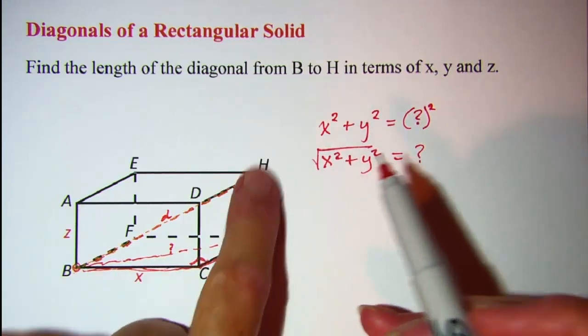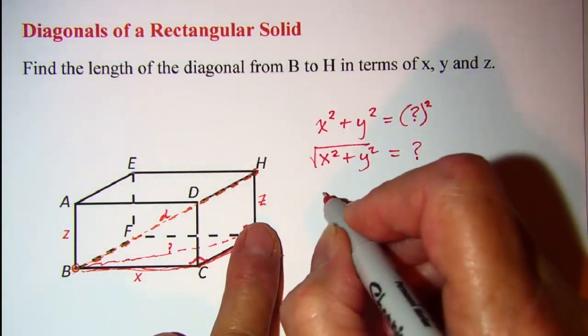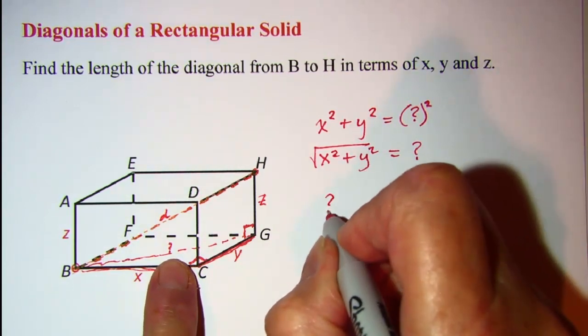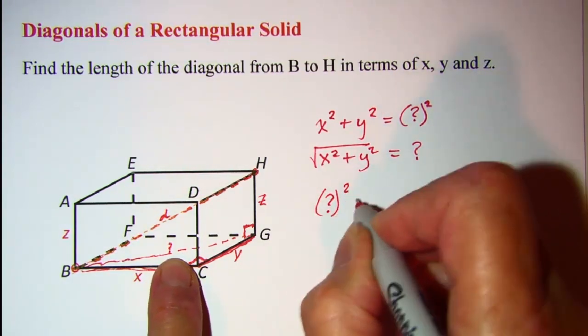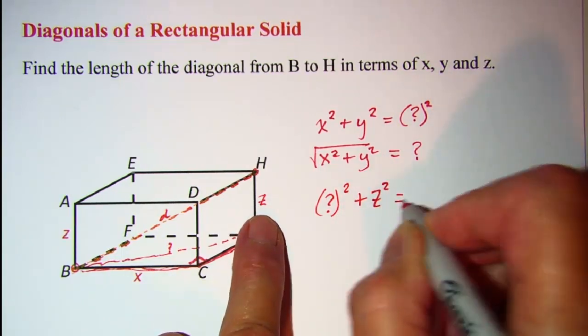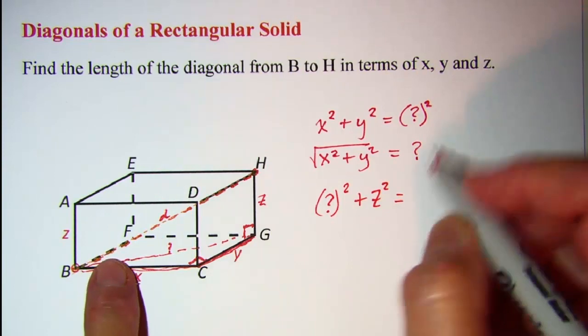So one of the legs is z, the other leg is question mark. So question mark squared plus z squared is equal to little d squared.